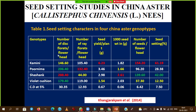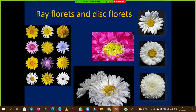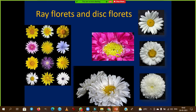Some important varieties released from IHR include Arka Kamini, Arka Purnima, and Arka Shashank. As a general rule in Asteraceae flowers, ray florets are pistillate in nature and disc florets are hermaphrodite in nature.